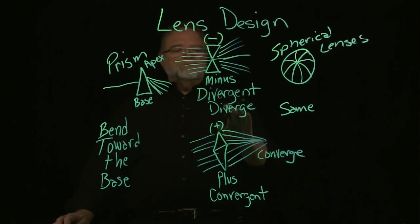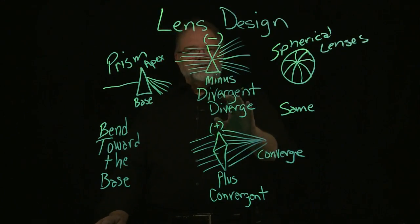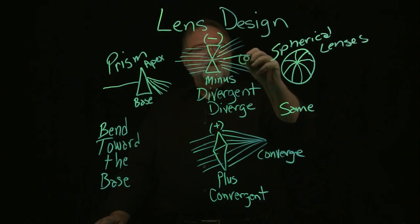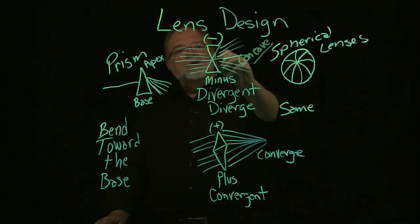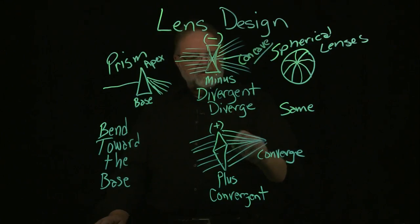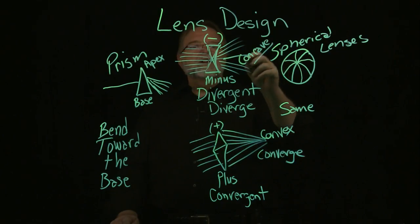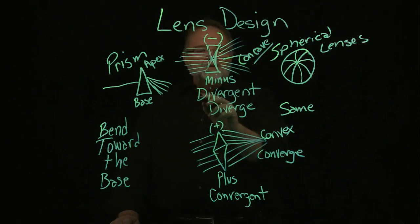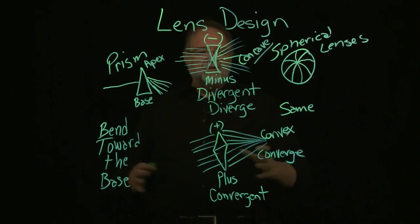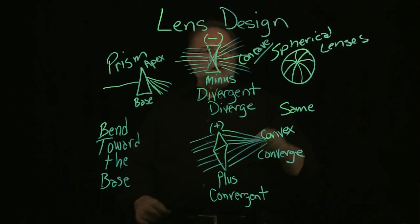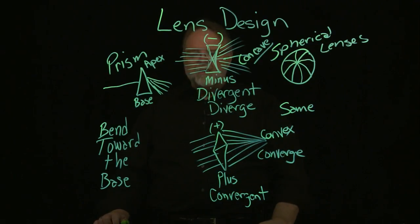Minus lenses cause light rays to diverge, so they're considered divergent, and they take a minus sign. This type of lens is called concave. A convex lens is a plus lens — it converges light and the light rays are convergent. A concave lens is a minus lens; it causes light rays to be divergent, it diverges light rays. That's the spherical lens — the power in every meridian is the same. We'll discuss how we get to the powers in another video.